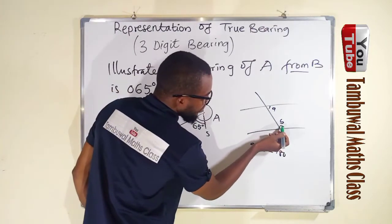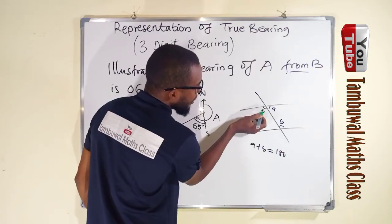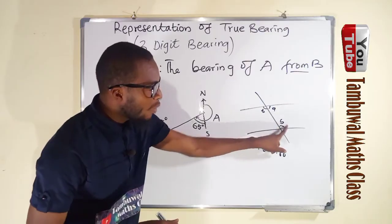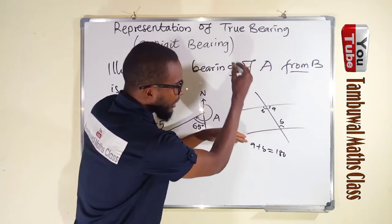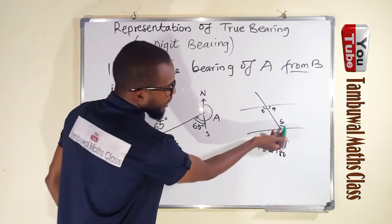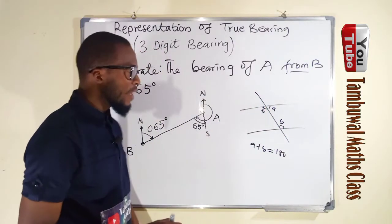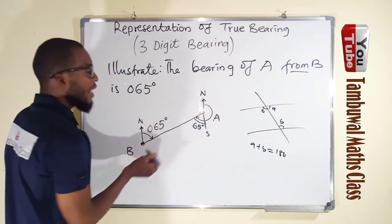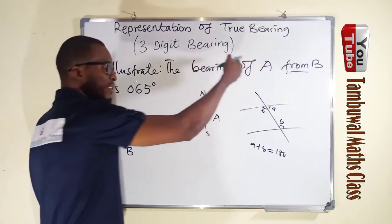We call them alternate angles. So if this is B, this angle here must be equal to B. We call them alternate angles. They are always equal to one another. If you have two parallel lines and a line cuts them through, the angle here and the angle here are said to be alternate to one another. And they are always equal. So this angle and this angle are equal because these lines are parallel. And this is the line that cuts them through.